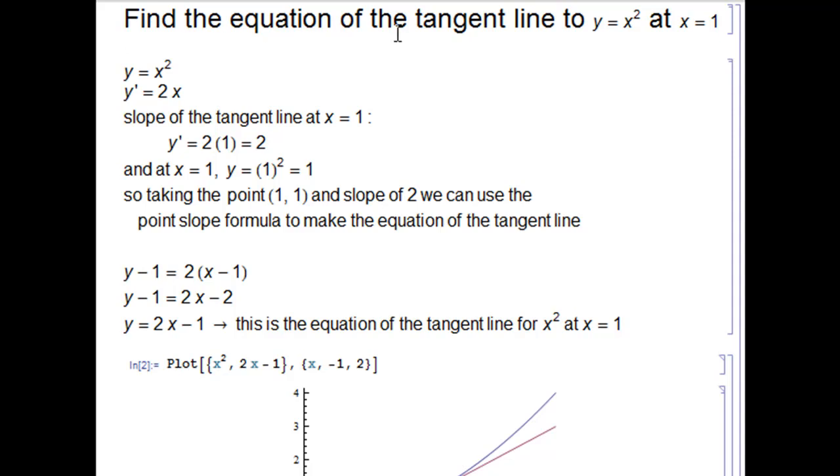We want to find the equation of the tangent line to y = x² at x = 1. First, take the derivative: y' = 2x. Then find the slope of the tangent line at x = 1. The slope is the derivative, so plugging in 1 for x gives us 2.